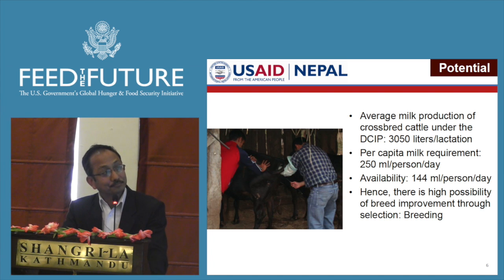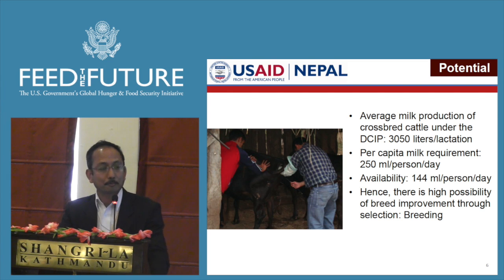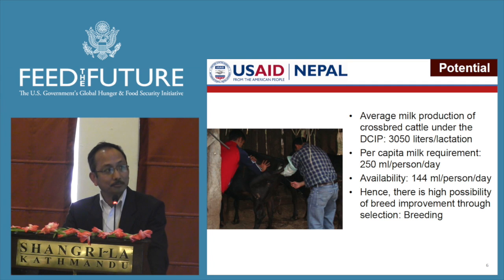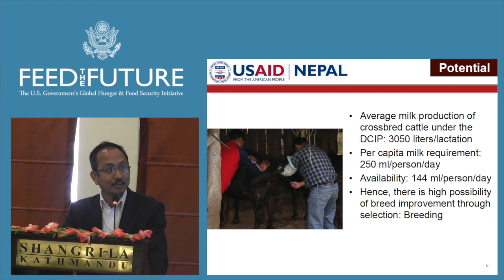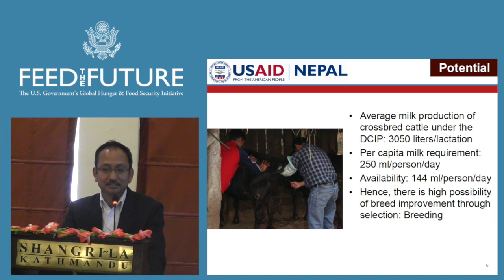Continuing on the potentiality: from experience during 2010 to 2012 under a program called DCIP — Dairy Cattle Improvement Program in Nepal, which was also funded by USAID — records show that milk production was as high as 3,000 liters per lactation in the case of cows. Looking at the realities, the per capita requirement for milk is 250 ml per person per day, against an actual figure of 140 ml — so it is very, very low. Therefore, there is a lot of possibility and potentiality to reach these targets by simply improving the breed.